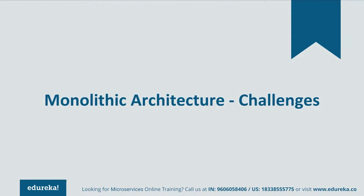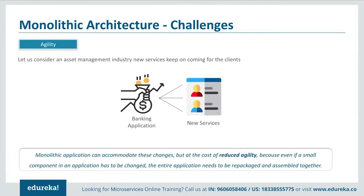Let's understand these challenges one by one. The first challenge is agility. Consider an asset management industry where different clients come with different investments and have to be offered different services. If any new services had to be given to new clients or any changes had to be made, monolithic applications could accommodate those changes, but at the cost of reduced agility. This happened because even if a small component had to be changed, the entire application had to be repackaged together.